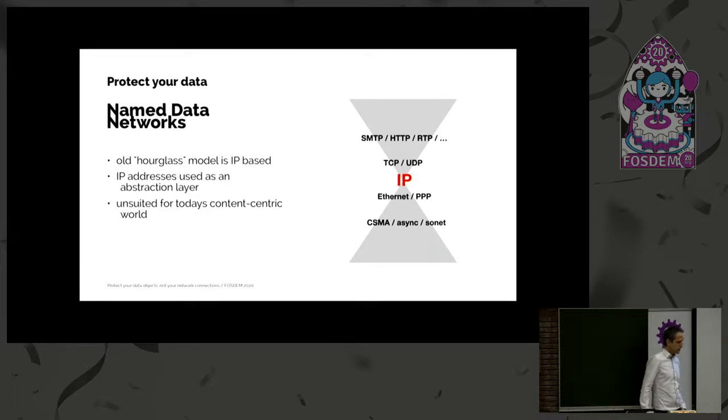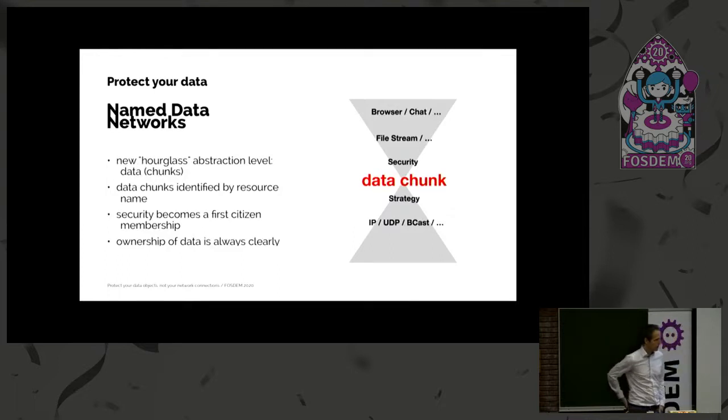The named data network architecture takes into account that 90% of our data is coming from streaming services. So one sender and multiple receivers. And instead of using the IP as the abstraction layer, you can also use a name, a data chunk, the name of a resource. And that is a little twist, but actually it is possible. So it's a new hourglass model. The IP address is not important anymore. And security becomes the first citizen.